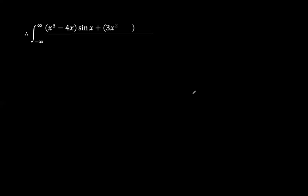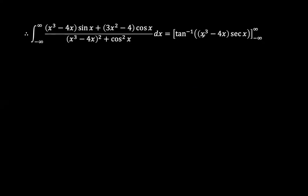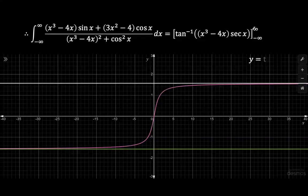Now bringing in the limits, our integration becomes arctan of (x³ minus 4x·sec(x)) evaluated from negative infinity to positive infinity. There are a lot of discontinuities in this function, and that's what we have to be really cognizant about. The function arctan(x) tends to negative π/2 as x goes to negative infinity, and tends to positive π/2 as x goes to positive infinity.